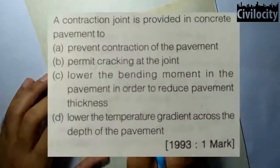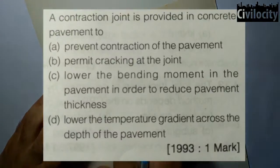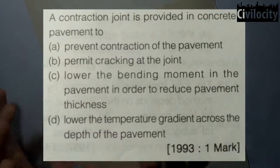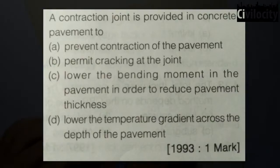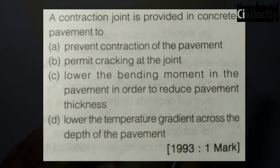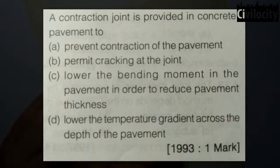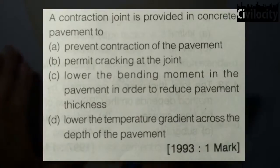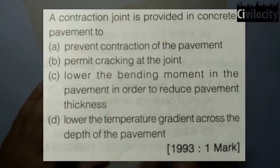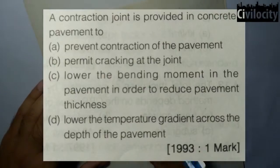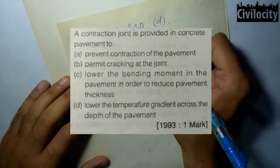The next question asks why a contraction joint is provided in concrete pavement. A contraction joint is provided for preventing the slab from contraction and to prevent the spreading of fine cracks that develop under contraction. Looking at the options: prevent contraction of the pavement — yes, that's true; permit cracking at the joint — no; lower bending moment — no; lower temperature gradient — no. So the first option, prevent contraction of the pavement, is correct.